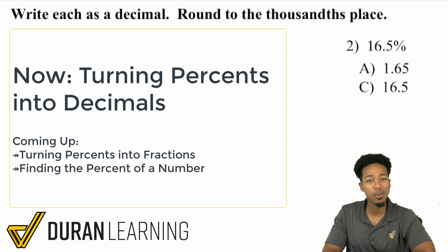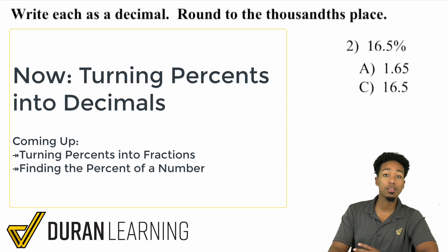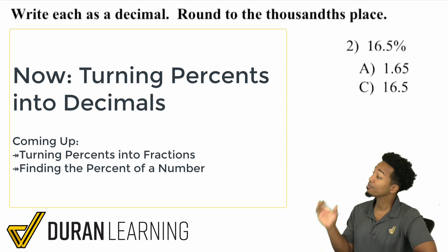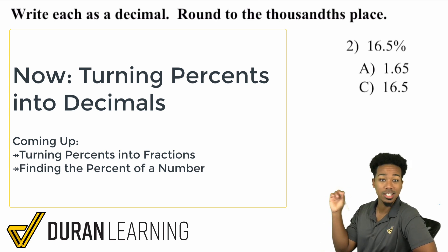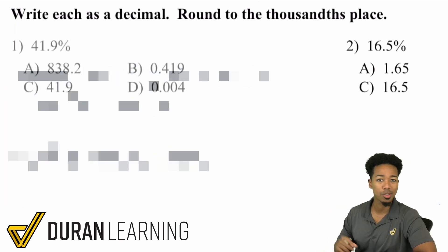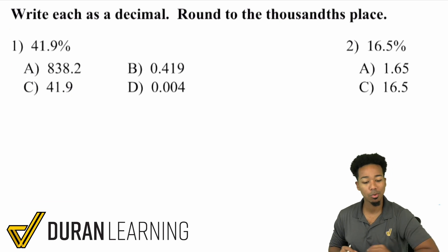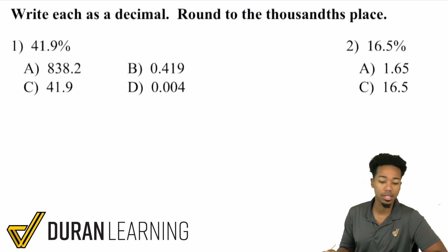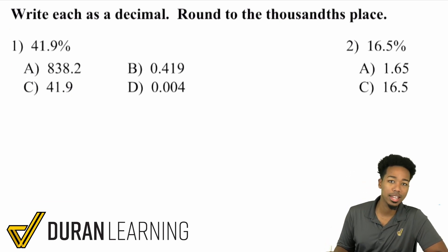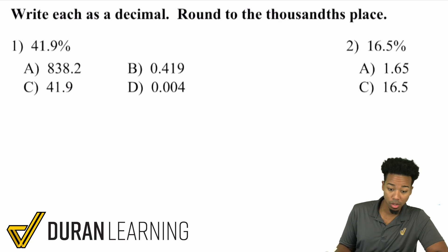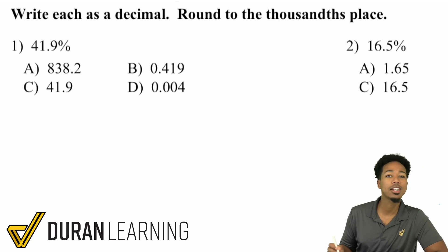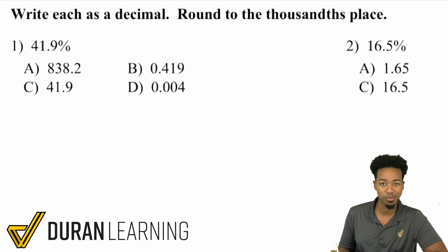So let me go ahead and show you here. The objective of this video is showing you how to turn percents into decimals. Let's start with number one: 41.9%. Let's turn that into a decimal. Here's how to turn a percent to a decimal.